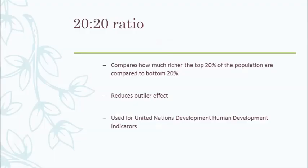Another important measure is the 20-20 ratio, which compares how much richer the top 20% of any population are compared to the bottom 20%. This can actually be more revealing of the actual impact of inequality. One major advantage is that it reduces the outlier effect at the top and the bottom. It is also used by the United Nations Development Programme for human development indicators.